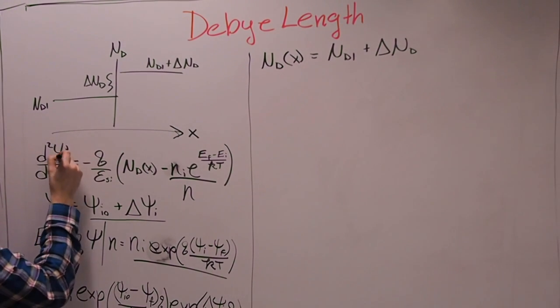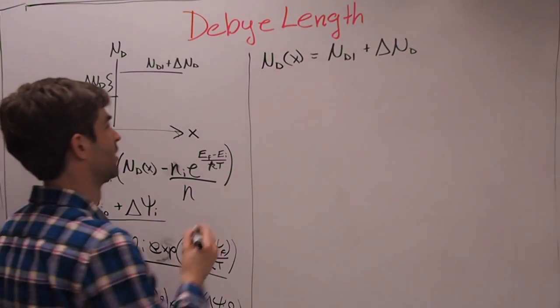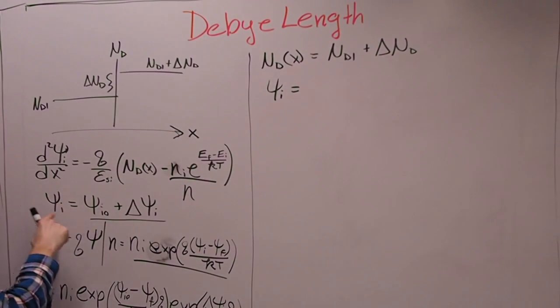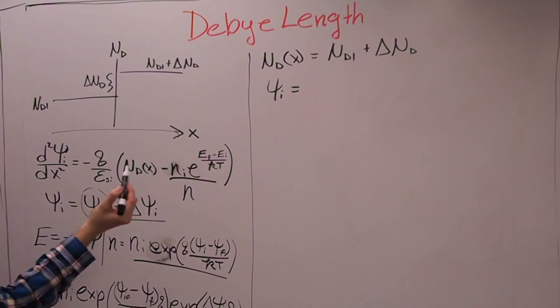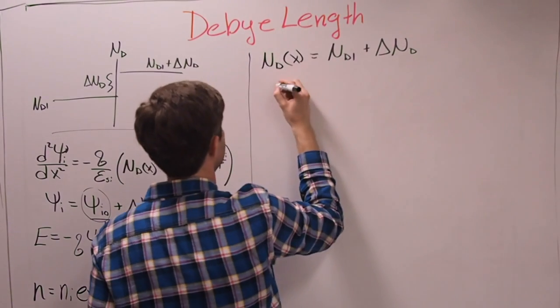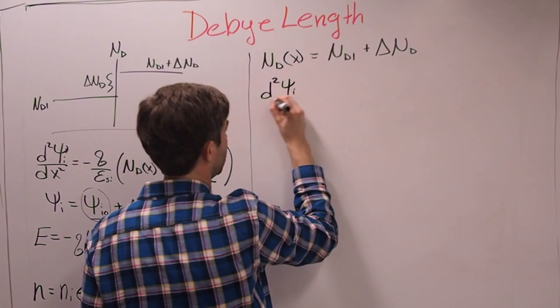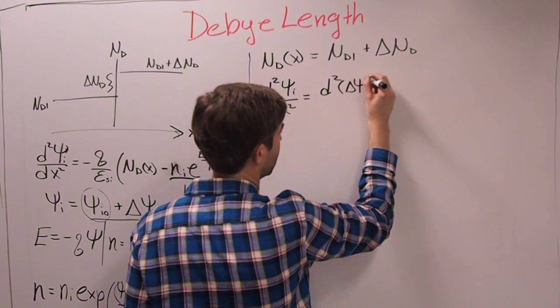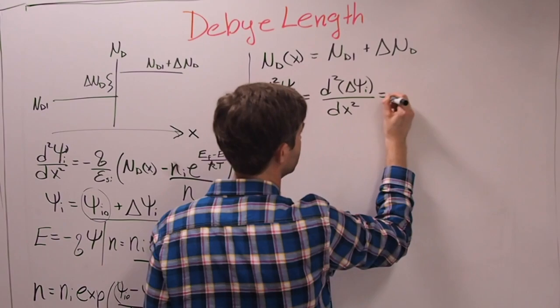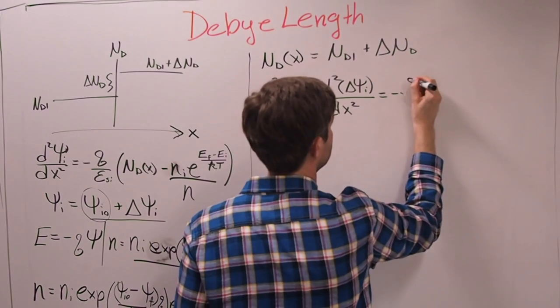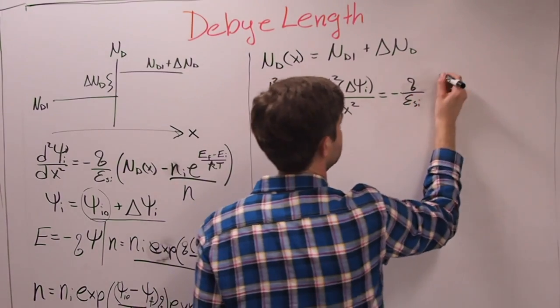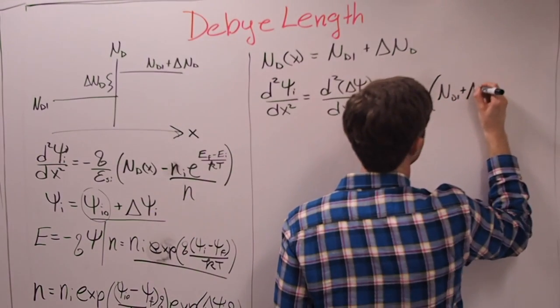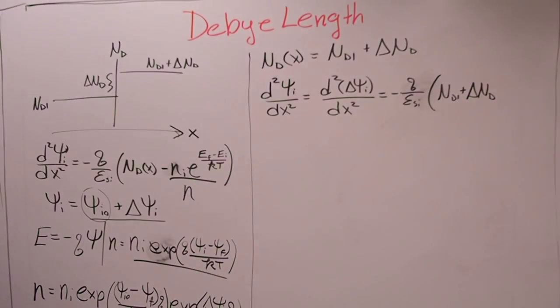We can also rewrite Nd of X equal to Nd1 plus delta Nd. We could also write these as functions of X, but to save space and time, I'm not going to do that.